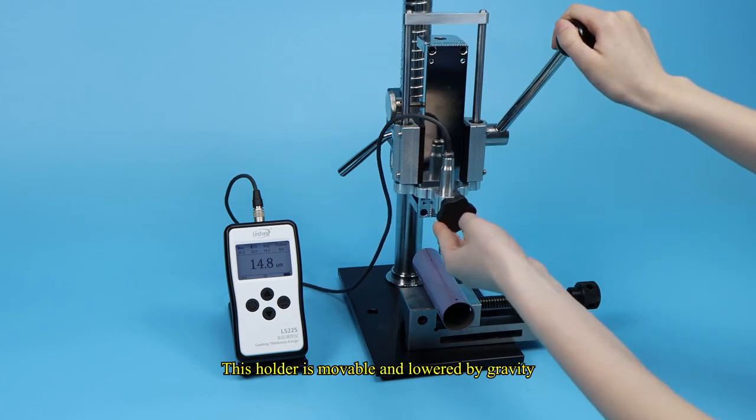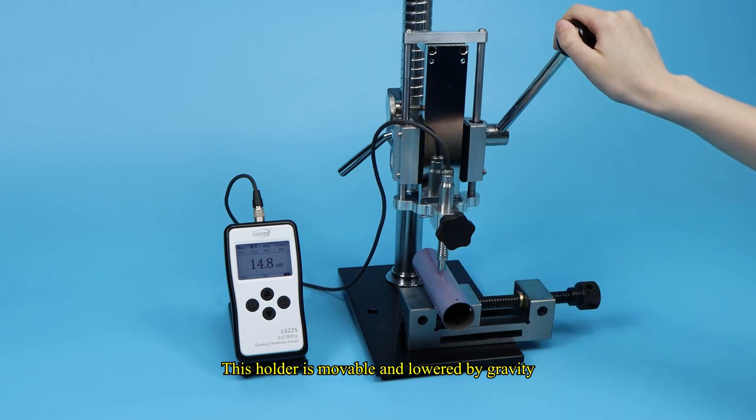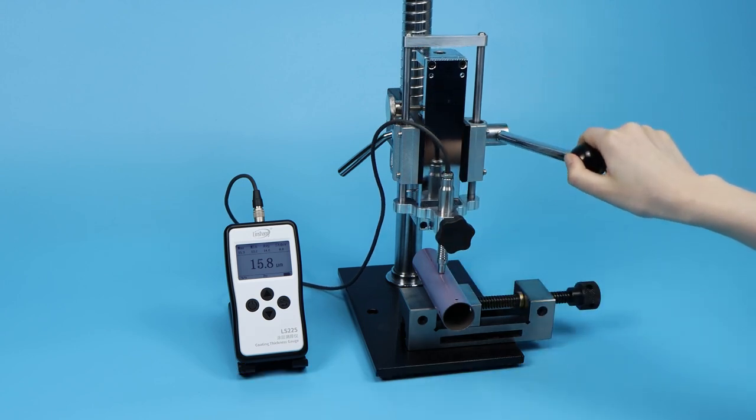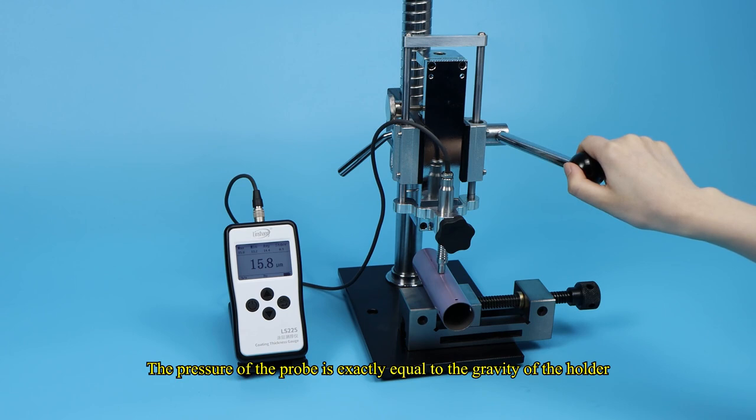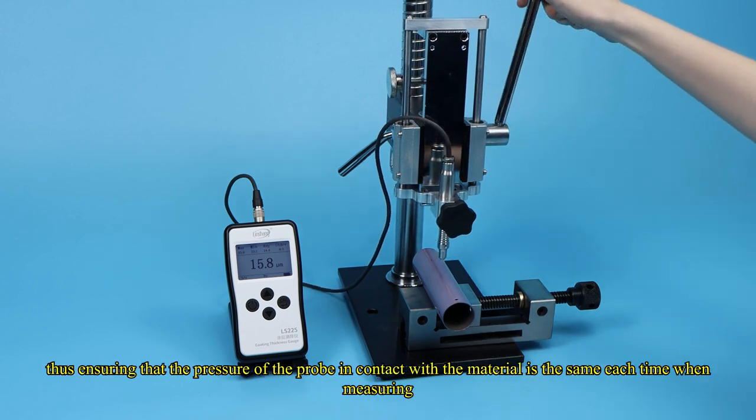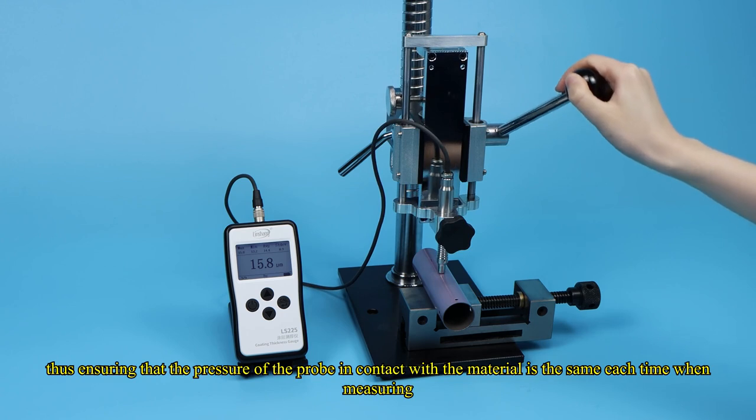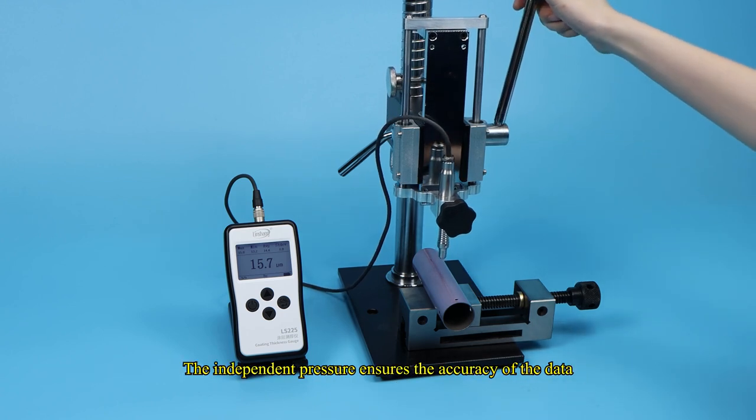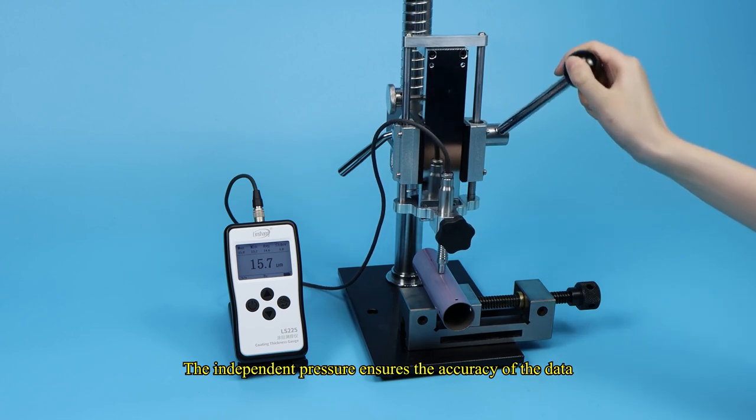This holder is movable and lowered by gravity. The pressure of the probe is exactly equal to the gravity of the holder. Thus ensuring that the pressure of the probe in contact with the material is the same each time when measuring. The independent pressure ensures the accuracy of the data.